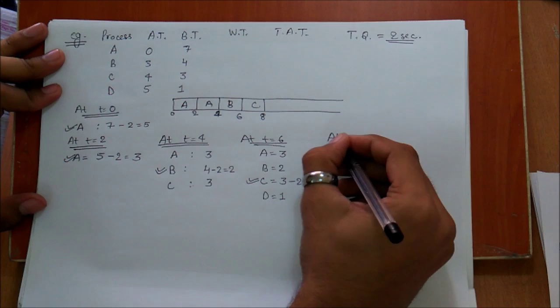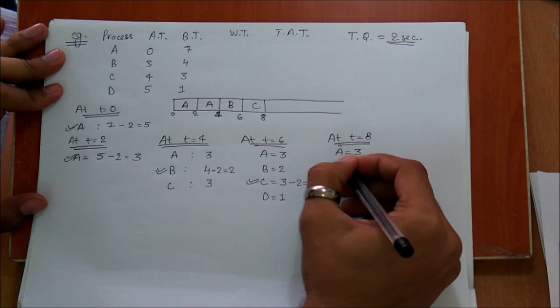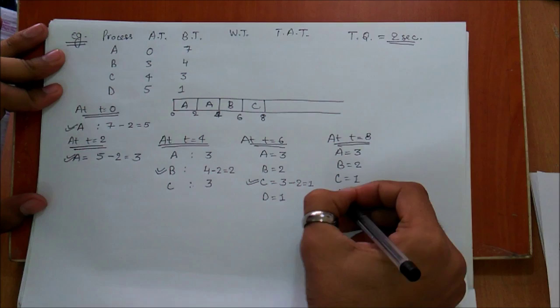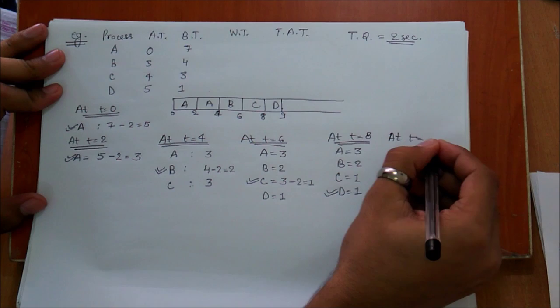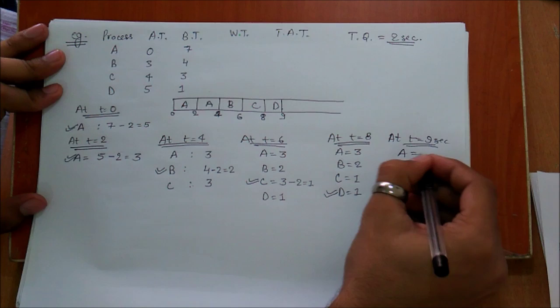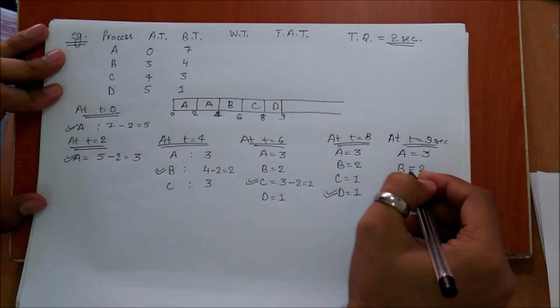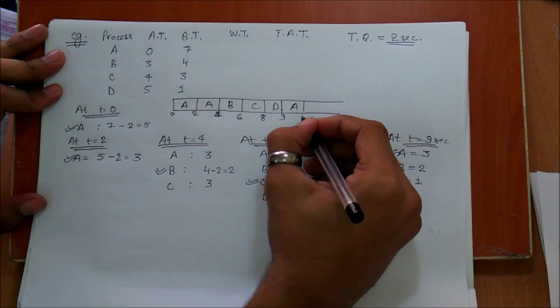Now at t=8, we have A=3, B=2, C=1, and D=1. We execute the next item D for 1 second, so it goes up to t=9. D completes. Now at t=9 we have A=3, B=2, and C=1. We again move to the first item in the queue, A, and execute it for 2 seconds, so it goes till t=11.